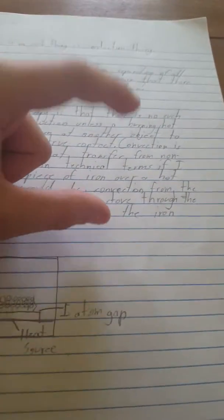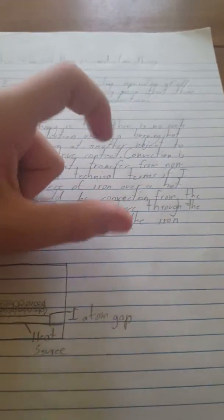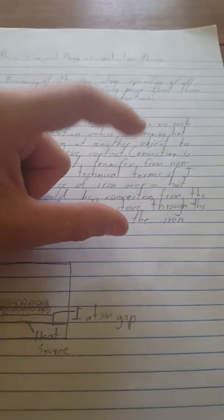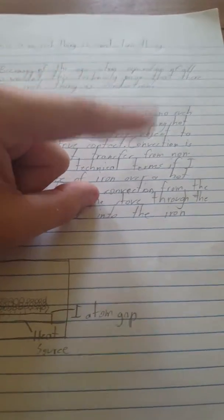Now, convection is where two atoms are separated from each other. So think of my two fingers as atoms, and they're not touching, clearly. But this atom at the bottom is releasing heat up and heating up this atom at the top.